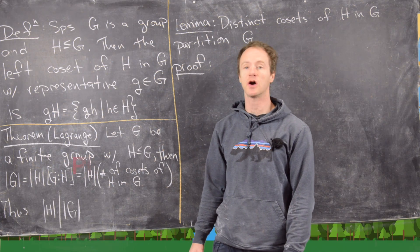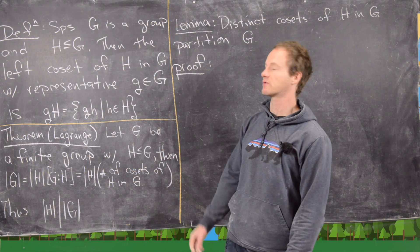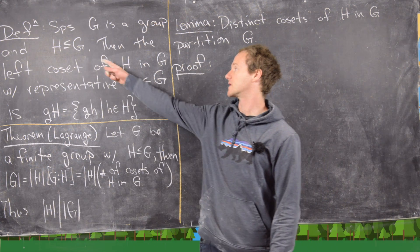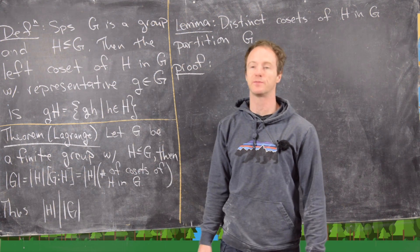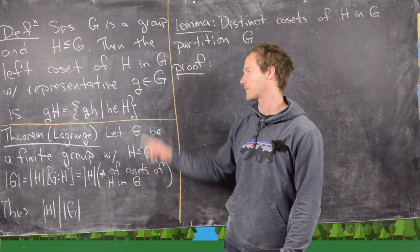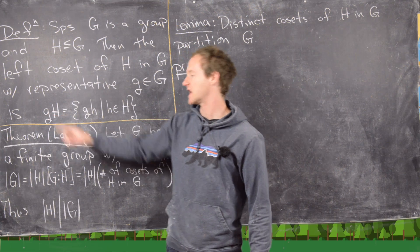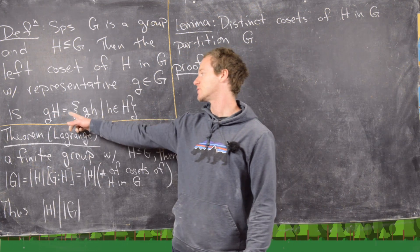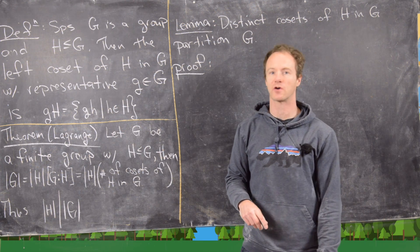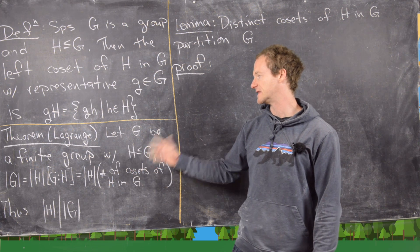In this video we're going to continue studying cosets by looking at something called Lagrange's theorem. Let's recall that a coset of a group is given by the following. We have a subgroup H of a group G, and the left coset of H in G with representative g is written gH, equal to all elements of the form g·h as h ranges over all elements of the subgroup.